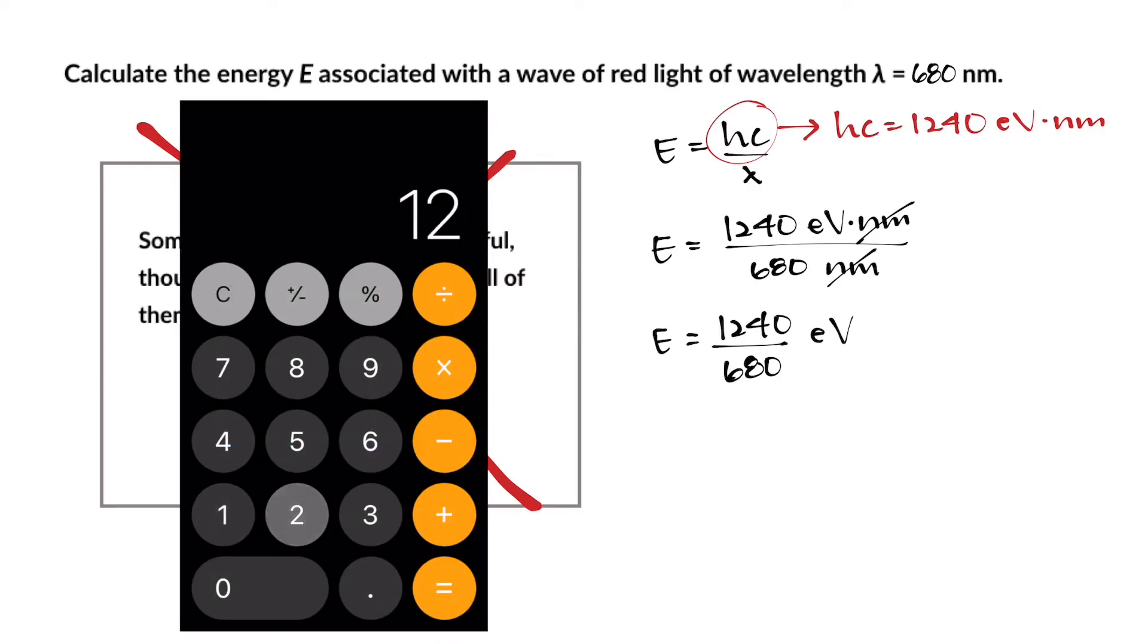So when you divide 1240 by 680 you get 1.82352 electron volts.